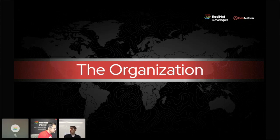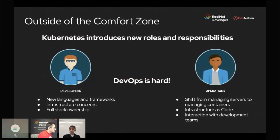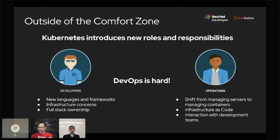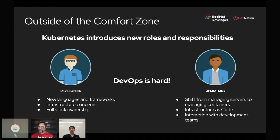Now we need to talk about the organization. All these different teams — whether development or operations — are in new territory. Developers have new languages and frameworks to worry about, and now they need to worry about infrastructure. Before, they didn't necessarily have to worry about infrastructure — they threw it over the wall once they checked their code in. With Kubernetes, we have a coalescence of these different teams, which is great, but it's very hard for organizations to make that possible because you have a lot of different opinions and a lot of people getting outside their comfort zone.